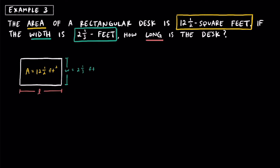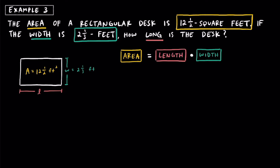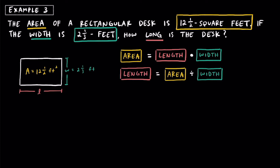Think back to the formula for the area of a rectangle. The area of a rectangle equals the length multiplied by the width. Since we're not looking for the area, let's rearrange it: if area equals length times width, then the length equals the area divided by the width. Swapping words for letters: length (L) equals area (A) divided by width (w). Swapping letters for numbers: the area is 12 and a half square feet, divided by the width of 2 and one third feet. Finding that quotient gives us the length.